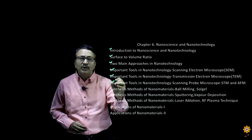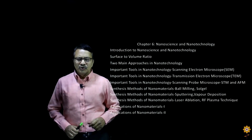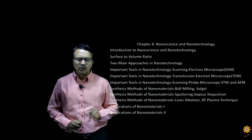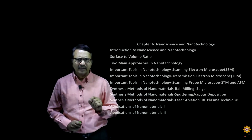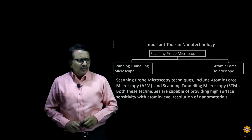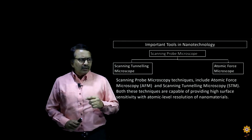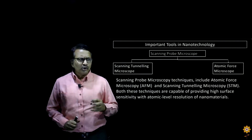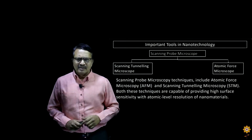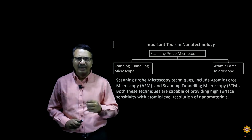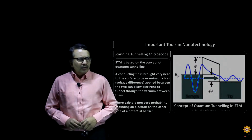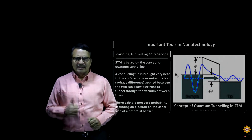So today we are going to study the two types of microscopes: the scanning tunneling microscope and the atomic force microscope. Both of these are categories under the scanning probe microscopy technique, and both are capable of atomic level resolution of the nano surface. Let us start with the scanning tunneling microscope.